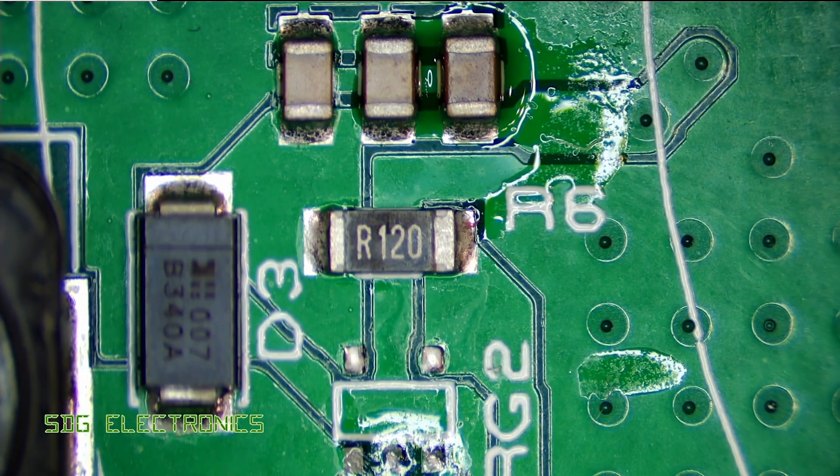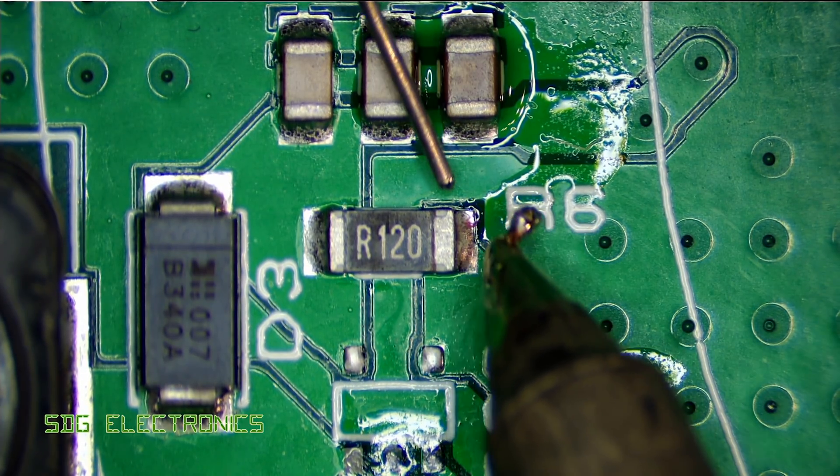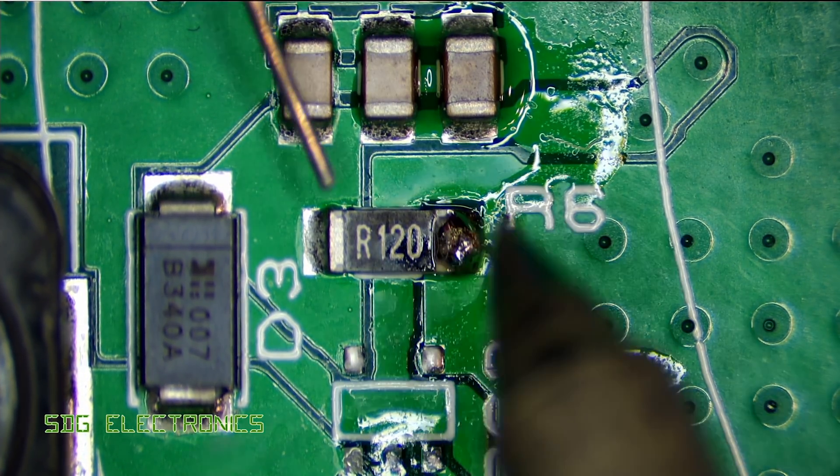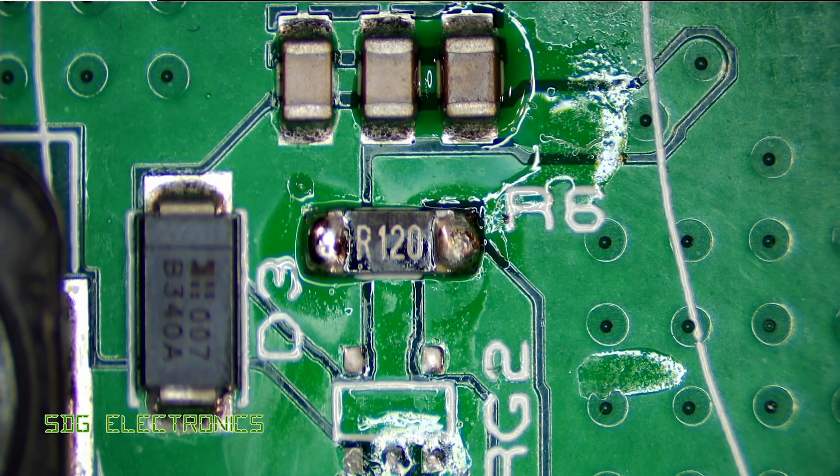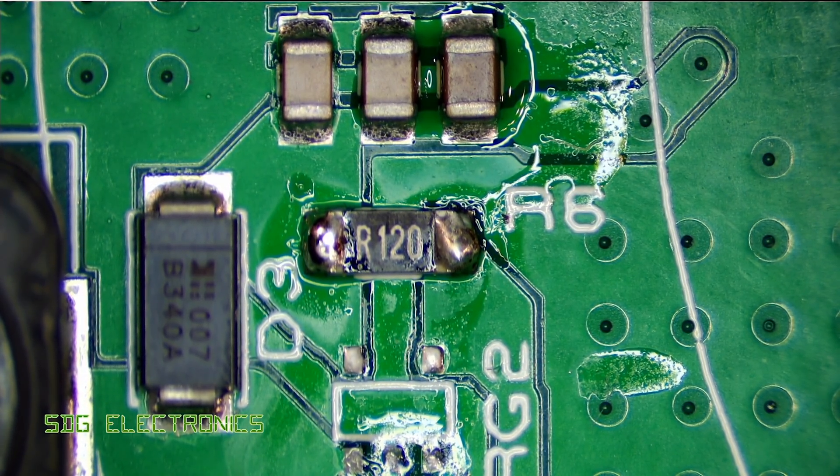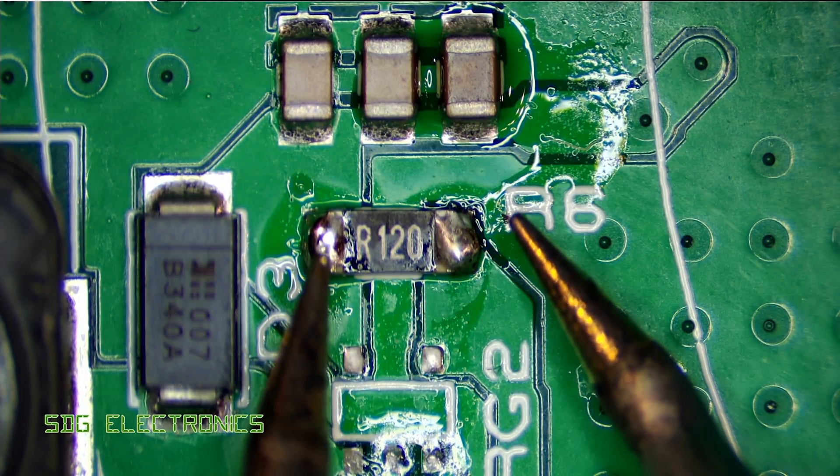So the first thing to do is to remove the sense resistors. And normally what I do is add a little bit of solder first before actually trying to remove them. So we've done that. And then we can use our fancy Metcalf tweezers to remove the resistors.